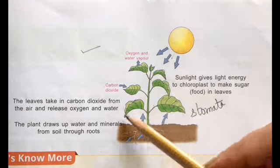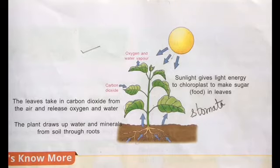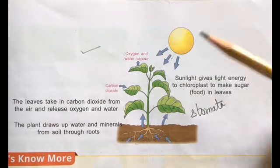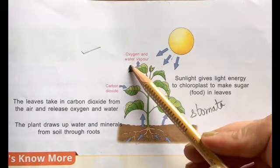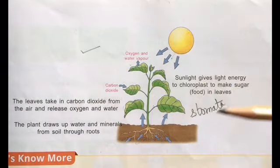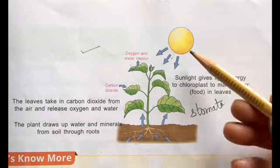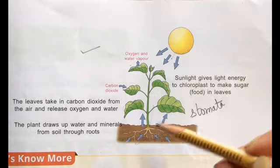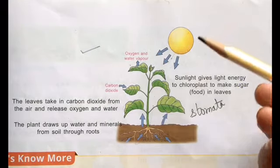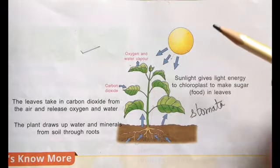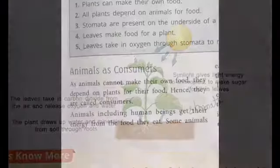After making their food, what do plants give out? They release oxygen and water vapor. So plants absorb carbon dioxide, sunlight, and water, and in return they give out oxygen and water vapor.